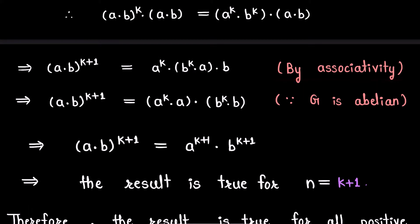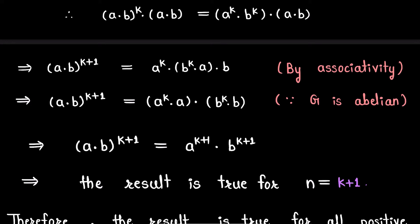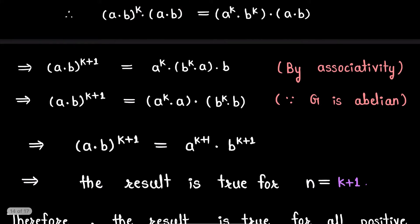By using associativity in group G, the LHS becomes (a·b)^(k+1) and the RHS becomes a^k · b^k · a · b. In the next step, since group G is abelian, the term b^k · a can be rewritten as a · b^k, and applying associativity again gives us a^k · a · b^k · b.